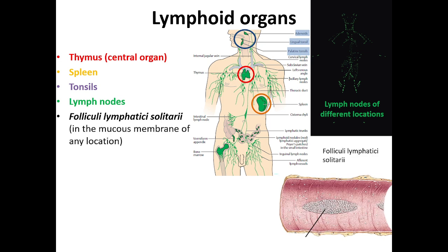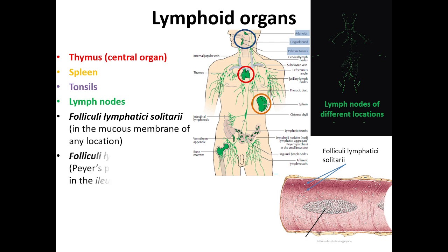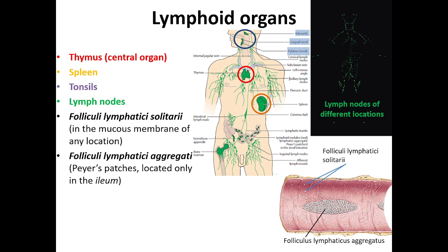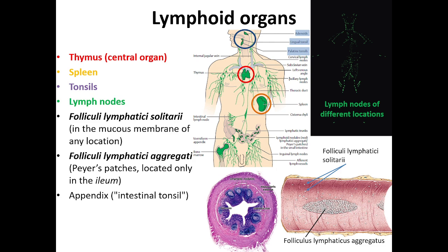The next group of lymphoid organs are associated with the mucous sheet. The folliculi lymphatici solitarii, in Latin, are located in the mucous membrane of any location. There are also folliculi lymphatici aggregati, or Peyer's patches, located only in the ileum — a complex of single lymphatic follicles. And lastly, the appendix, which could be called the intestinal tonsil.